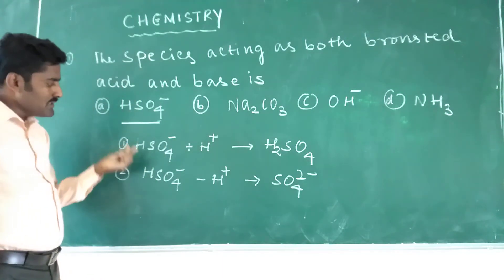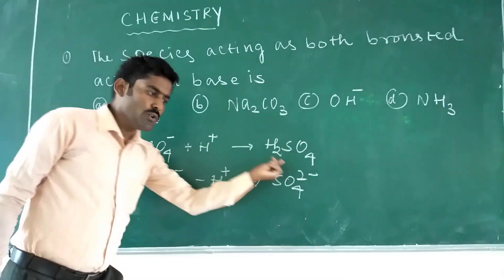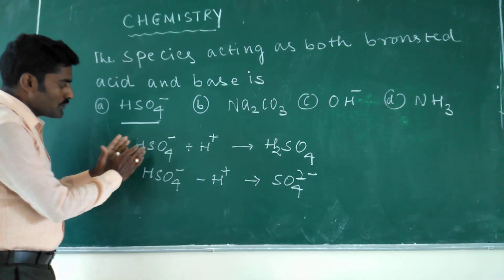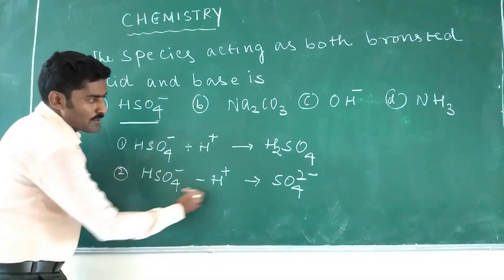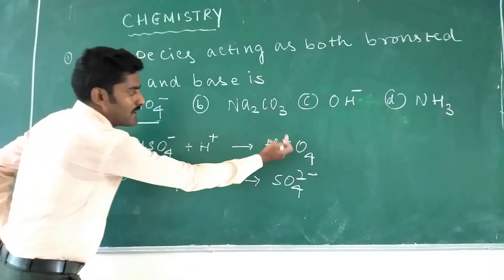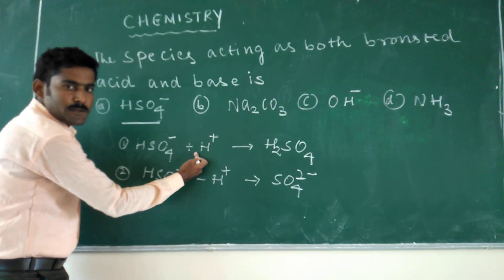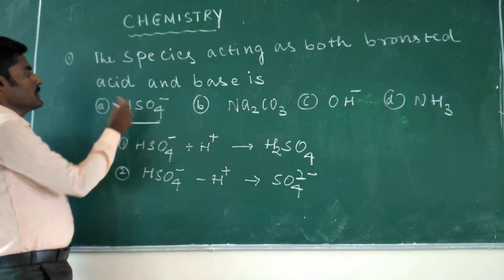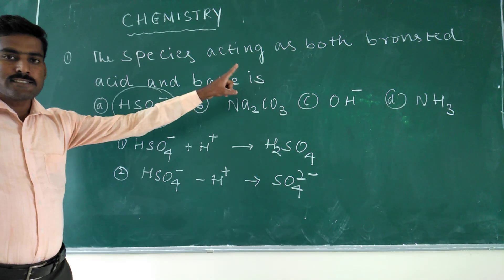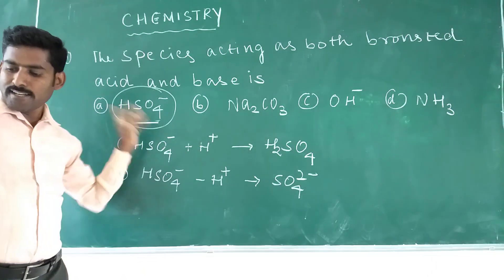So here, for this question, hydrogen sulfate is gaining one proton to form H2SO4 and losing one proton to form sulfate ion. So that means hydrogen sulfate acts as a Bronsted Acid according to step 2. So that, so HSO4- ion species acts as both Bronsted Acid as well as a Bronsted Base. The correct answer.